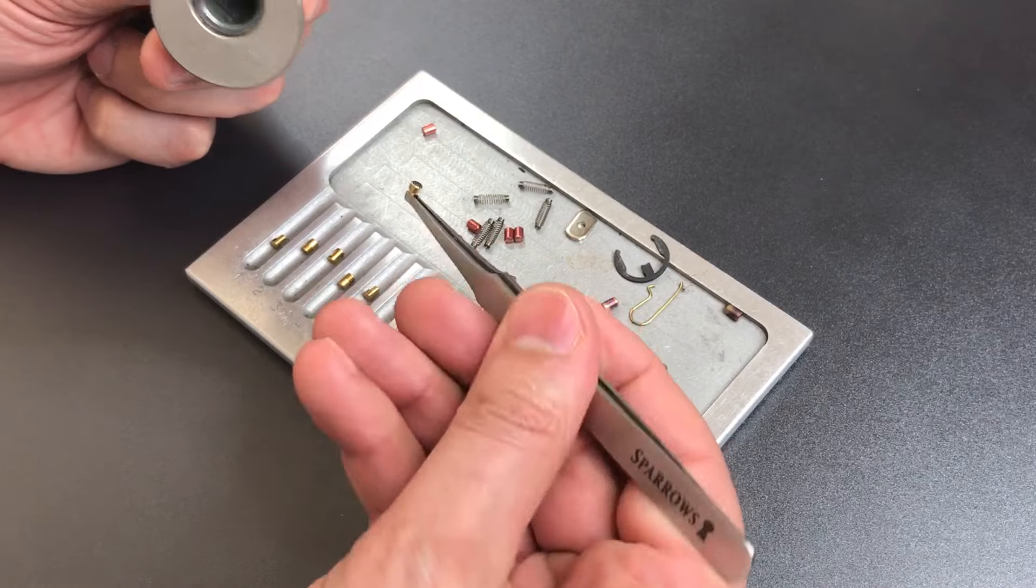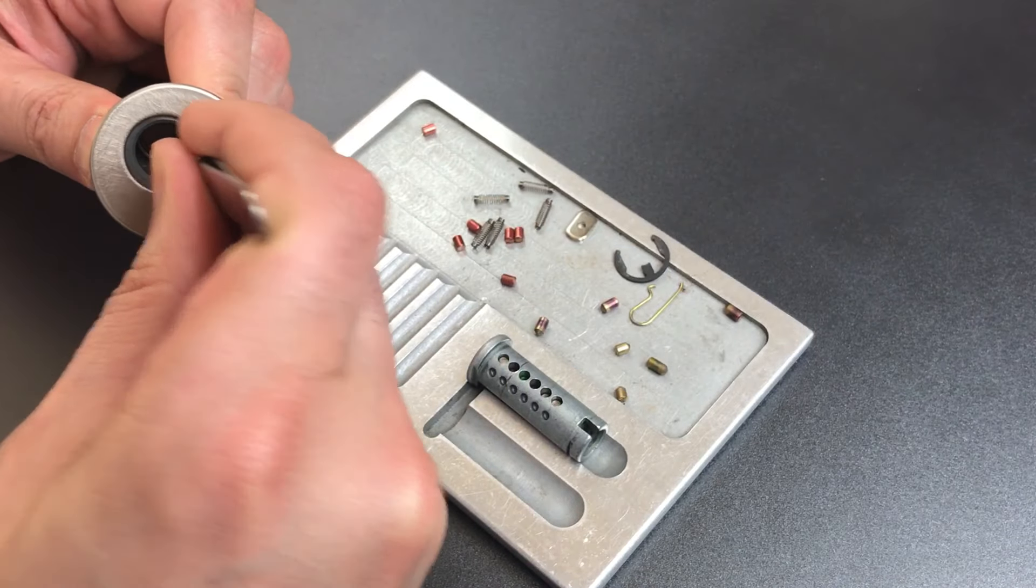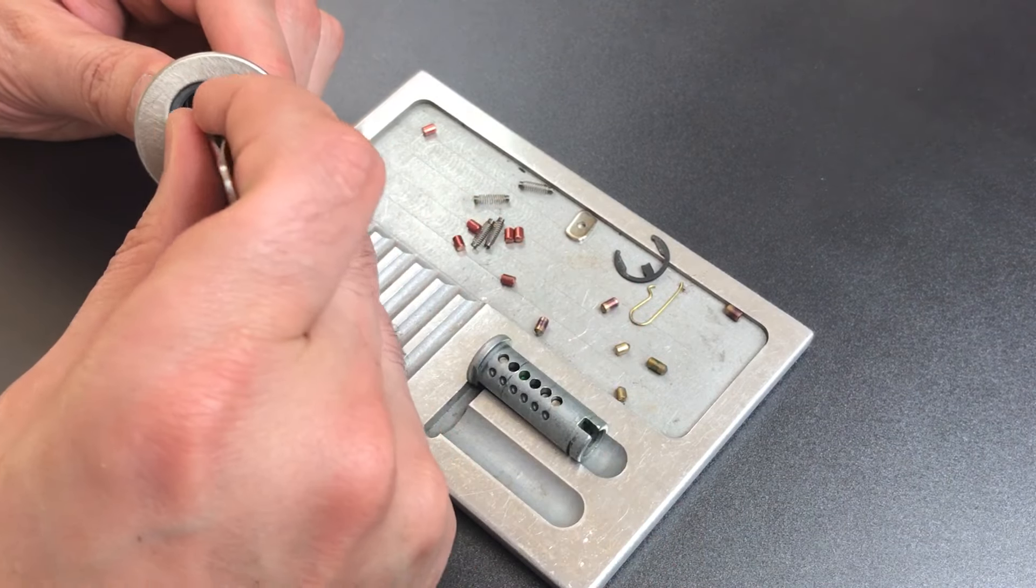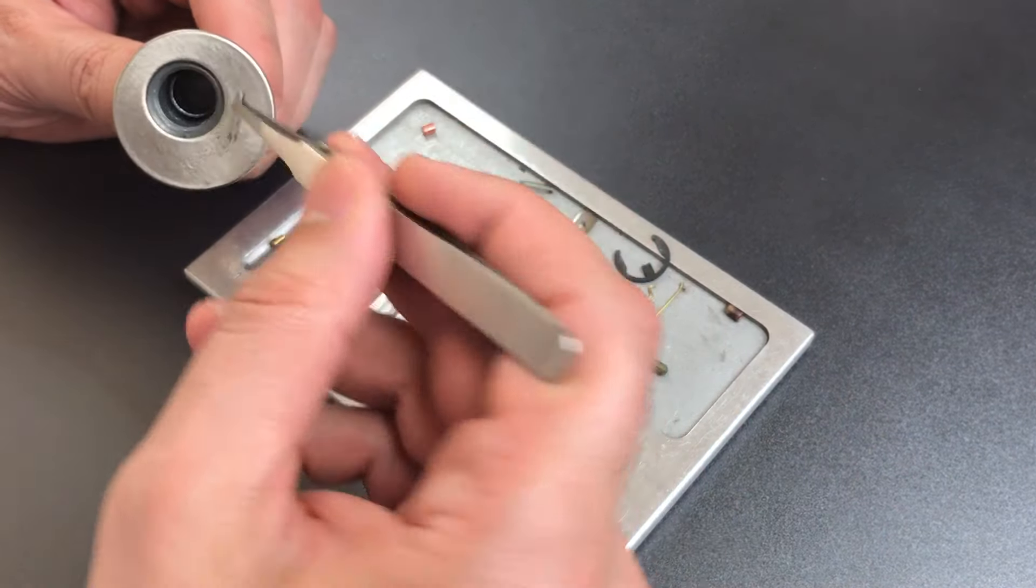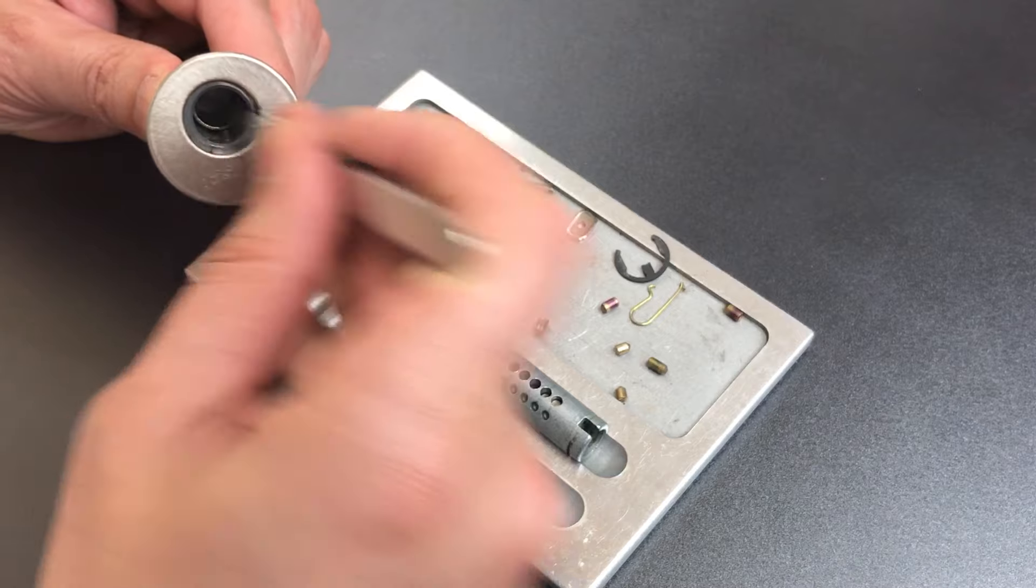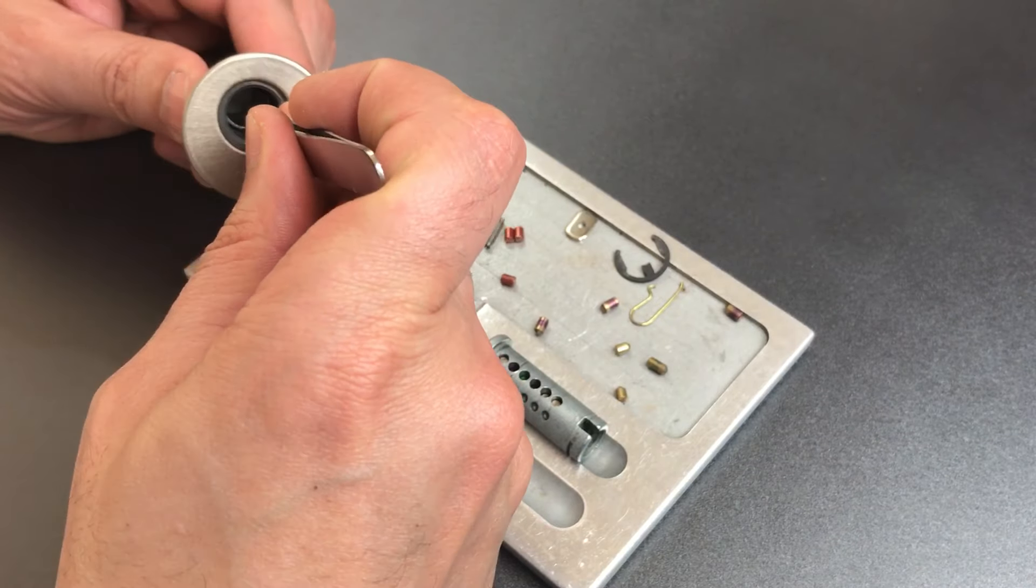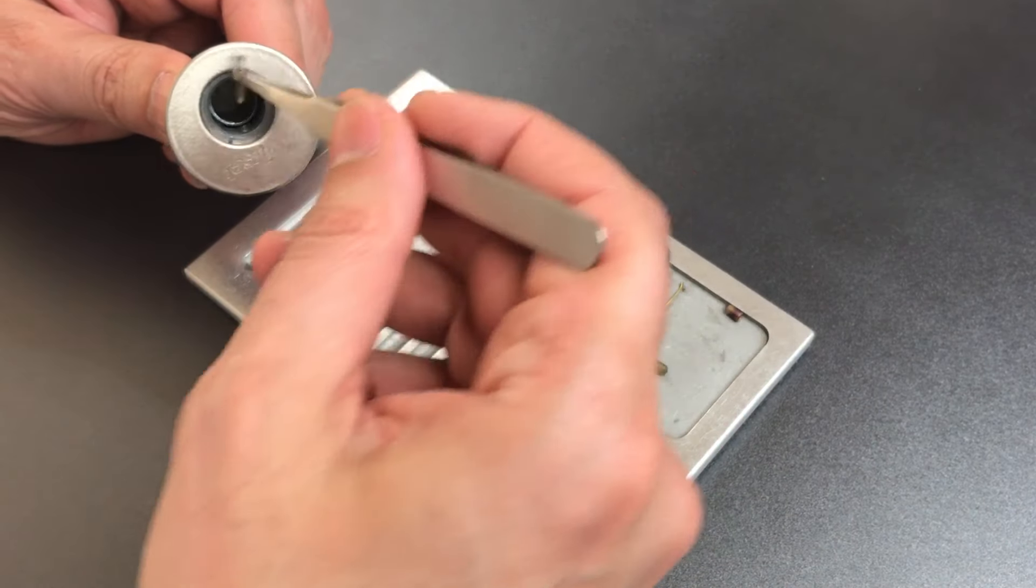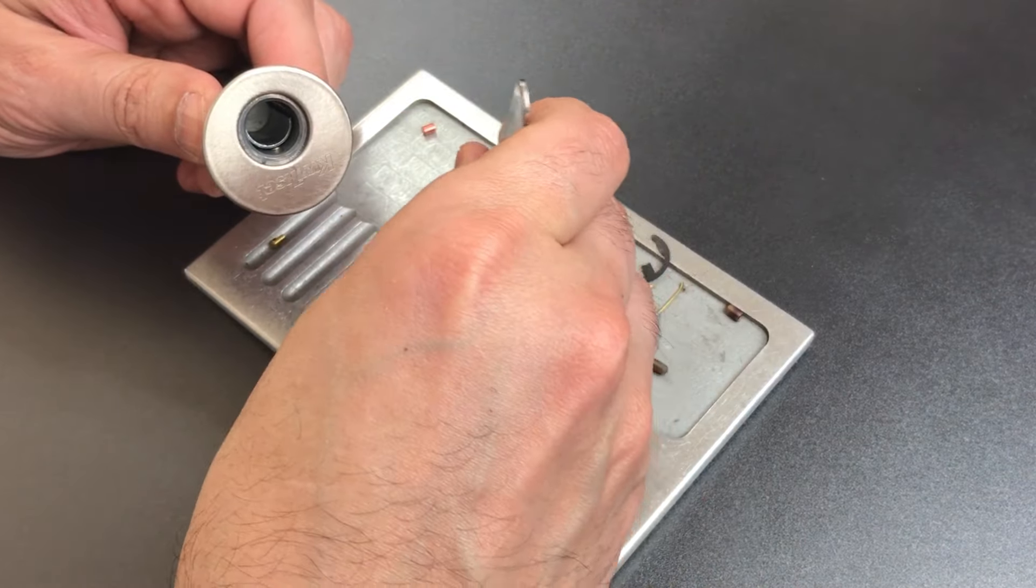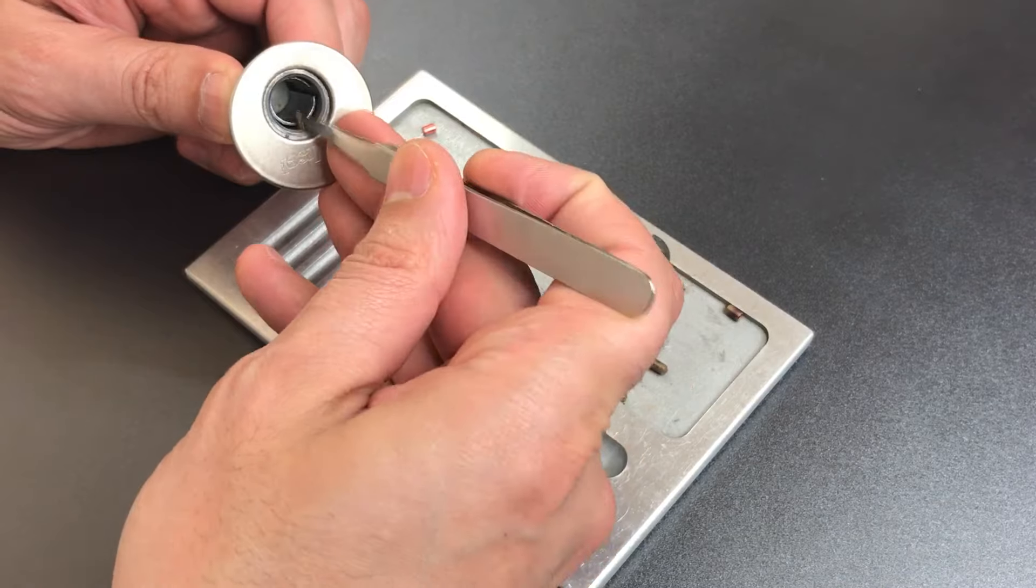Okay, so number six will be a T-pin with the narrow end facing toward the core. Number five will also be a T-pin, again with the narrow end facing toward the core. I have a serrated pin in slot four, and that's really arbitrary. You could just as easily put a standard pin in there. A spool in slot three. A serrated pin in slot two. And a T-pin with the narrow end facing toward the core in slot one.